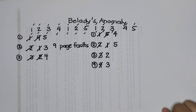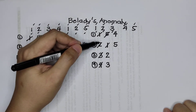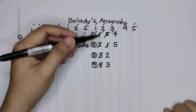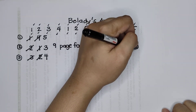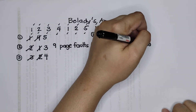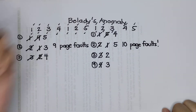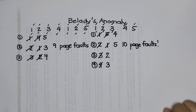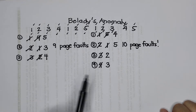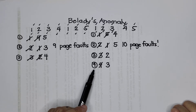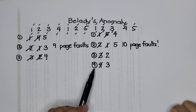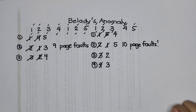So if we count: one, two, three, four, five, six, seven, eight, nine, ten — ten page faults. That is Belady's Anomaly: if you increase the page frame, it will also increase the page faults.